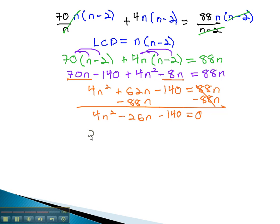We can now start factoring by pulling out the GCF of 2, to get 2n squared minus 13n minus 70, and either use the quadratic formula, or continue factoring to 2n plus 7 times n minus 10 equals 0.